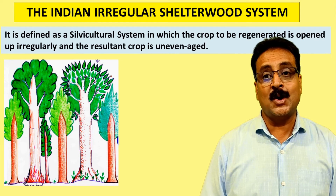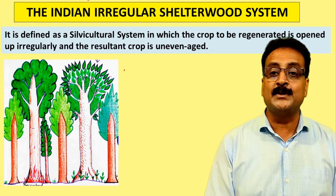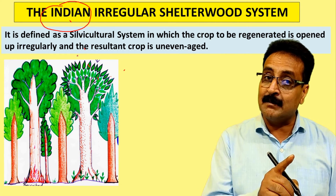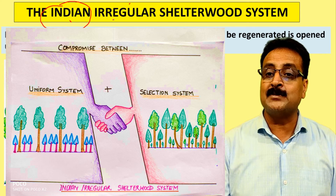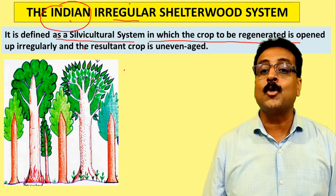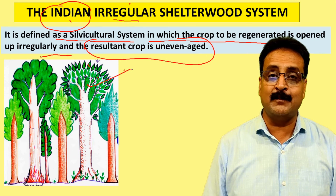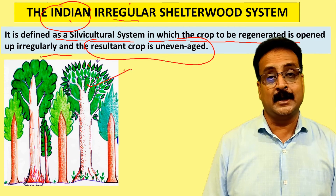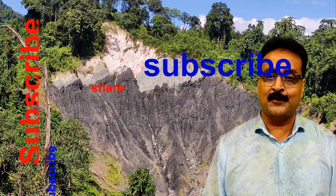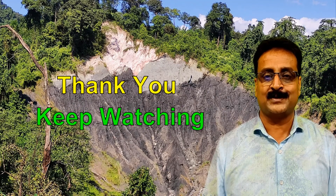Now we study the Indian Irregular Shelter Wood System. The difference here is that the compromise is between the uniform system and the selection system — not between the group system and the selection system. It is defined as a silviculture system in which the crop to be regenerated is opened up irregularly and the resultant crop is uneven-aged. This will be covered in lecture 17, with an example of Shorea robusta. Thank you, namaste.